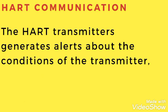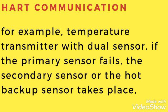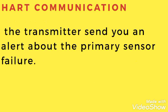The HART transmitter generates alerts about the condition of the transmitter. For example, a temperature transmitter with a dual sensor: if the primary sensor fails, the secondary or hot backup sensor takes over, and the transmitter sends an alert about the primary sensor failure. So we can diagnose faults using the HART communicator.